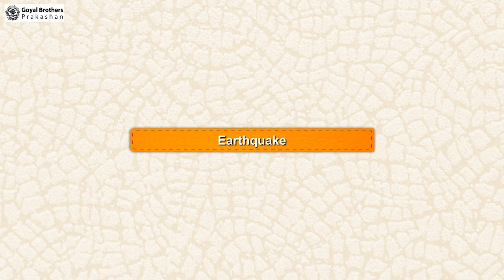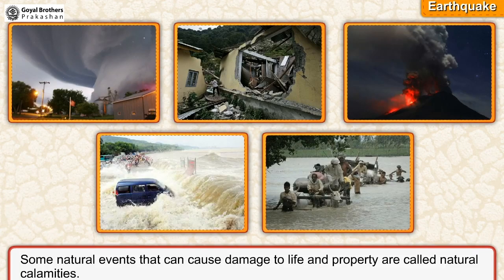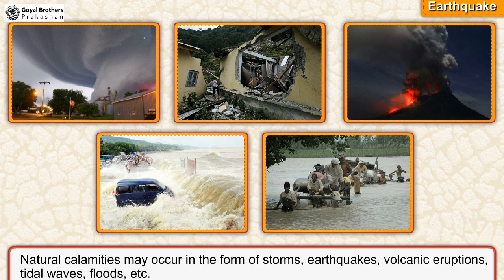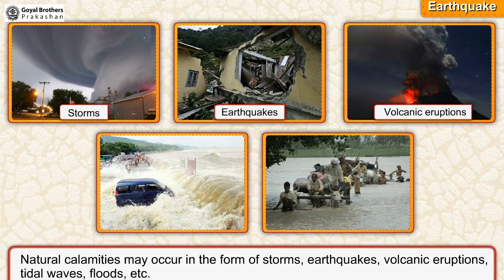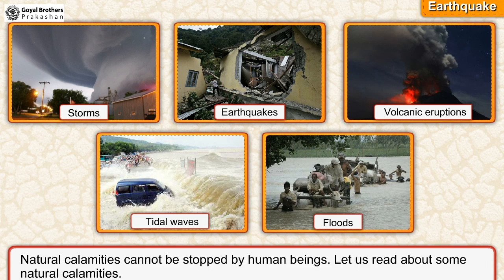Some natural events that can cause damage to life and property are called natural calamities. Natural calamities may occur in the form of storms, earthquakes, volcanic eruptions, tidal waves, floods, etc. Natural calamities cannot be stopped by human beings. Let us read about some natural calamities.